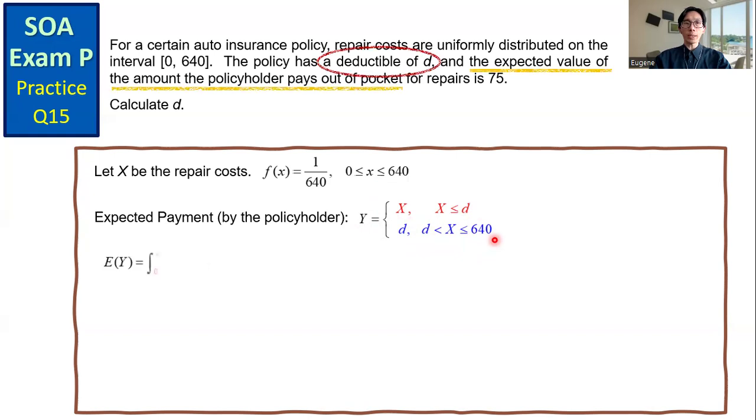Compute the expected value of Y. The first term, we have the repair cost is between 0 and D. The integrand is X, the first PDF function for Y, times the PDF of X, which is 1/640. And then the second term is for X between D and 640. We have D times f(X), which is 1/640.